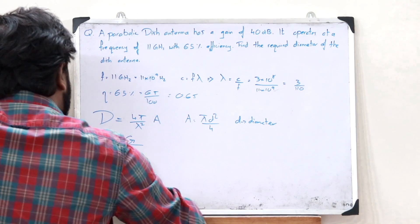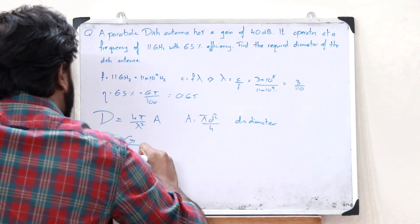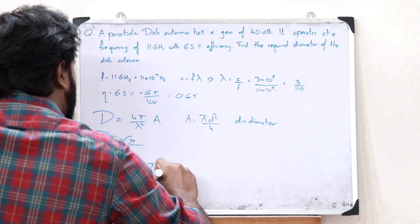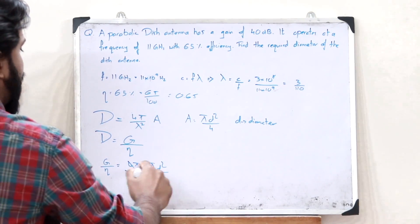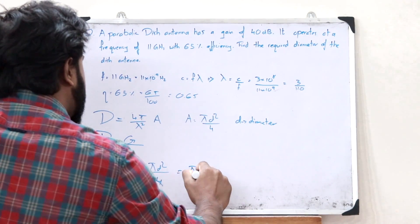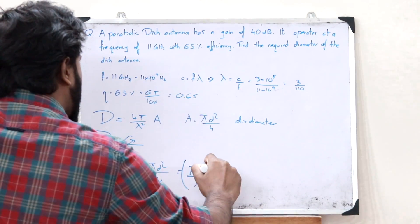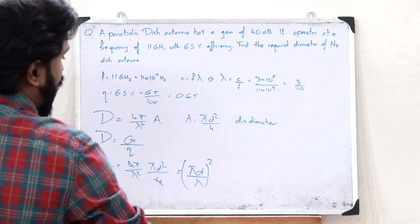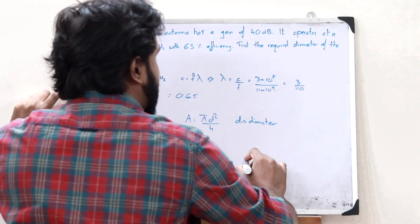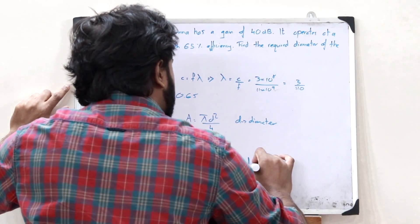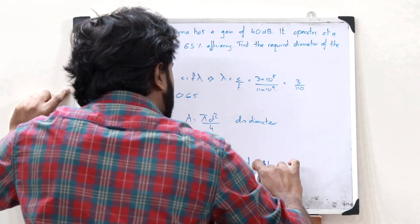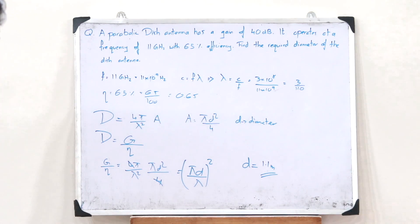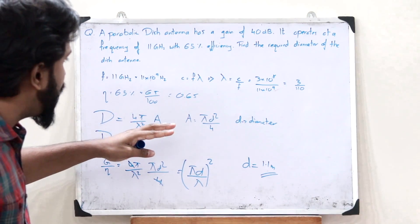So G/η = (4π/λ²) × (πd²/4). The 4s cancel, giving G/η = (πd/λ)². On substituting the values and solving for d, we get d = 1.1 meters. It's as simple as that — direct substitution gives us the diameter.